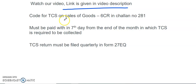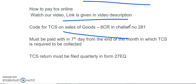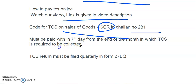The code for payment of TCS under Section 206C-1H is 6CR in challan number 281. This TCS must be paid within the 7th date from the end of the month in which TCS is required to be collected. Further, the TCS return must be filed quarterly in Form 27Q. I hope you understand Section 206C-1H. Thank you.